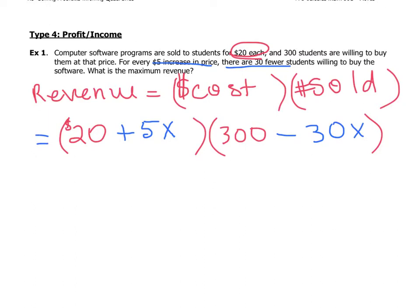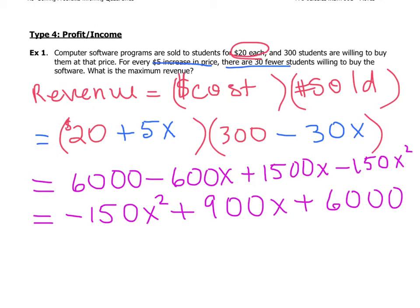For instance, if we increase the price once by five dollars to twenty-five dollars, then thirty fewer people buy, so only 270 people buy. Now we multiply everything through to make it look like a quadratic. Simplified and rearranged, we get: minus 150x² plus 900x plus 6,000.